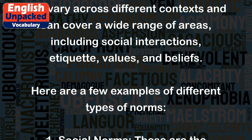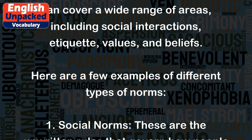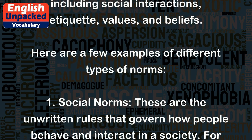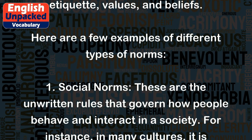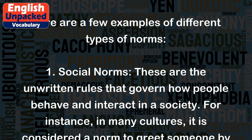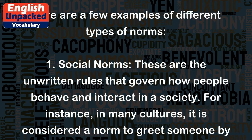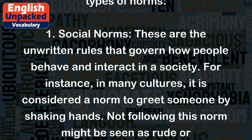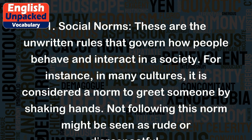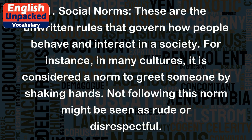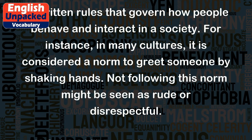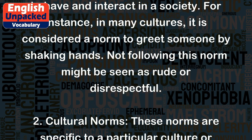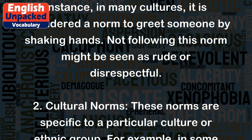Here are a few examples of different types of norms. 1. Social norms. These are the unwritten rules that govern how people behave and interact in a society. For instance, in many cultures, it is considered a norm to greet someone by shaking hands. Not following this norm might be seen as rude or disrespectful.